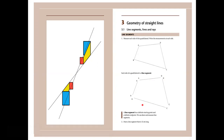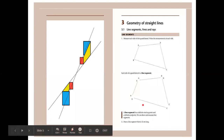A line segment has a definite starting point and a definite ending point. We can draw and measure line segments. Draw a line segment that is 12 centimeters long. The important thing is it has a definite starting point and a definite ending point.